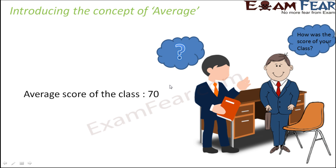This basically means that some students would have scored less than 70 and some students would have scored more than 70. But if we assume everyone scored the same, then each scored 70. Actually, not everybody scored the same — there are students who scored 90 and students who scored 50 — but when you distribute marks evenly between all the students, you can see that the average score of the class is 70.